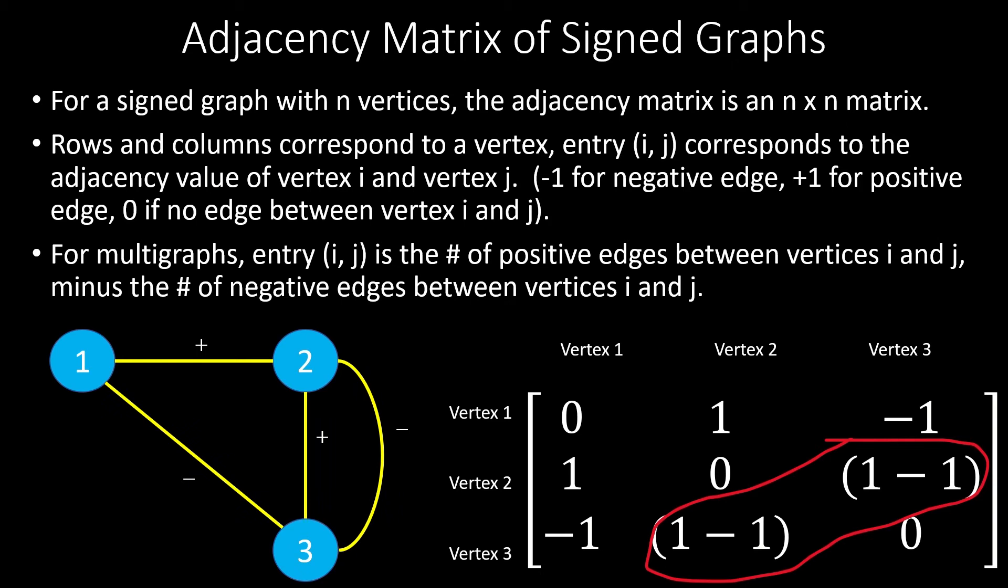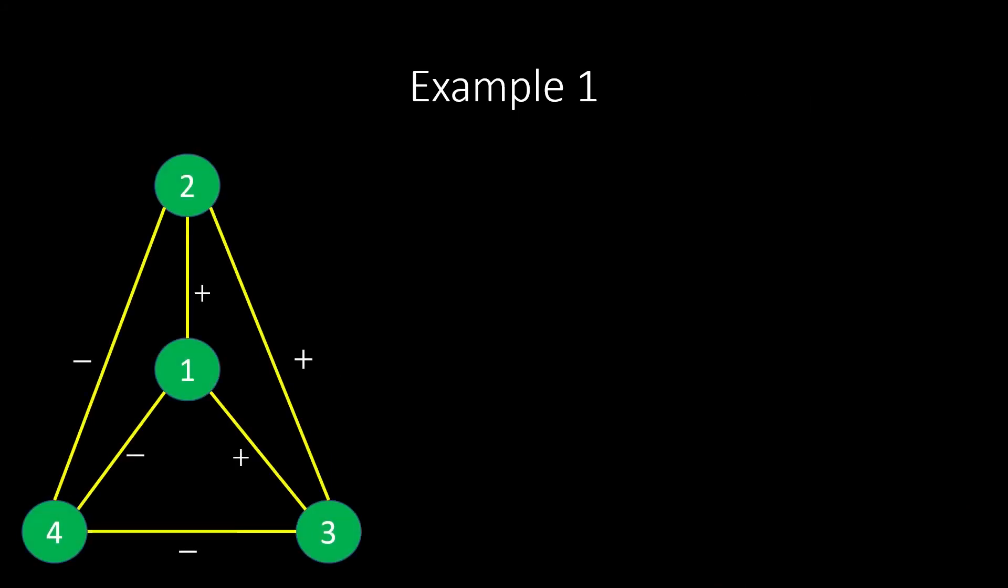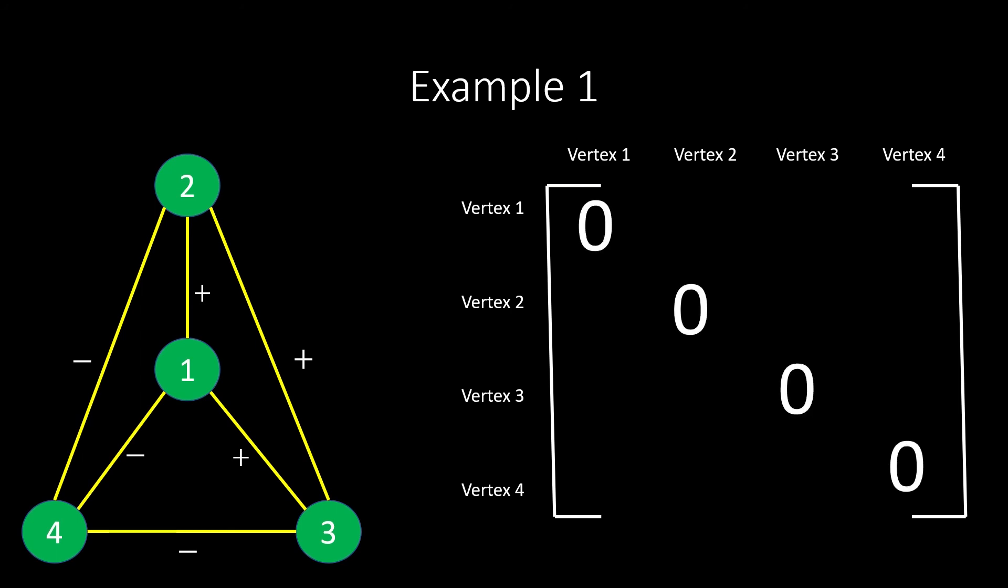Let's look at two examples. First, let's find the adjacency matrix of this signed graph. No vertex is adjacent to itself in this graph, so the diagonal entries will be 0. Vertex 1 is adjacent to vertices 2 and 3 with a positive edge, and to vertex 4 with a negative edge, so entry 1, 2 and 1, 3 will be positive 1, and entry 1, 4 will be negative 1.